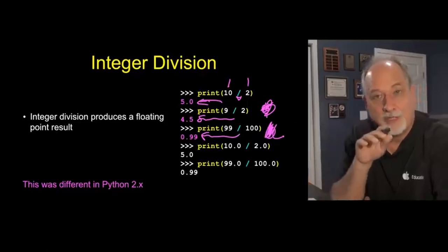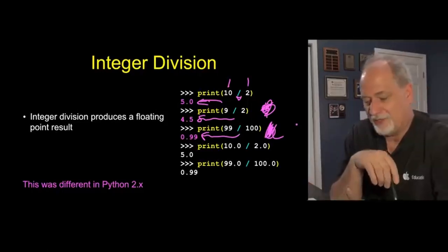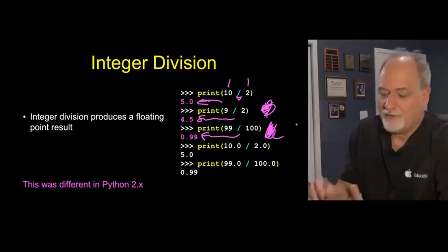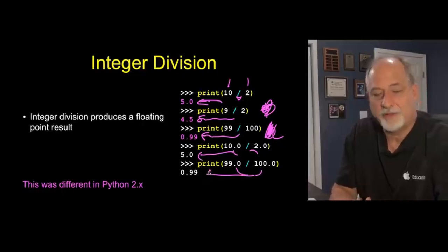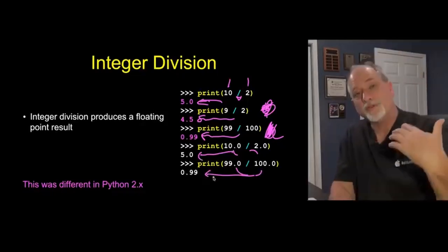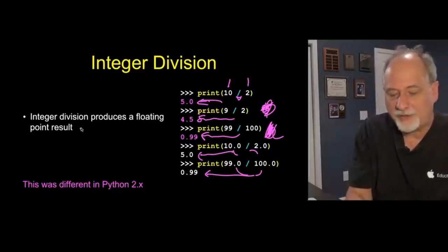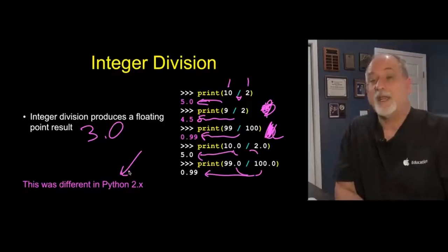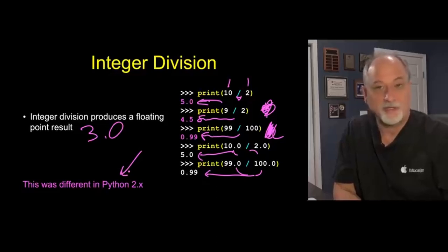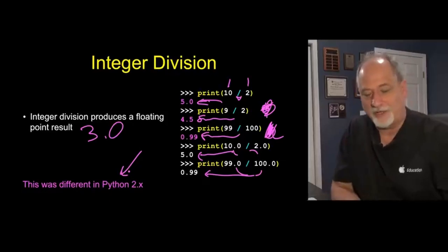In old Python 2, that would give us back 4, which is completely unpredictable and weird. The same with 99 over 100, as you would expect if this were a calculator, you get 0.99. Actually, what you get in Python 2 is 0 because it would truncate it. That's Python 2. We're not talking about Python 2. There's a good reason we're not talking about Python 2. Welcome to Python 3.